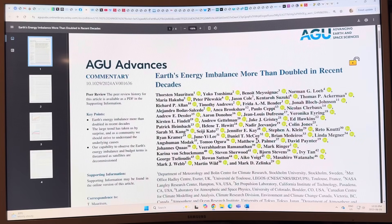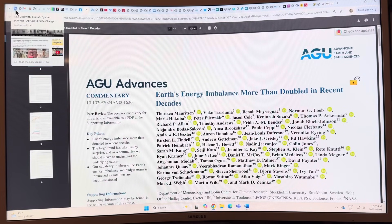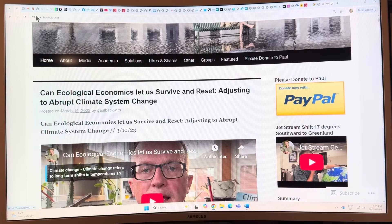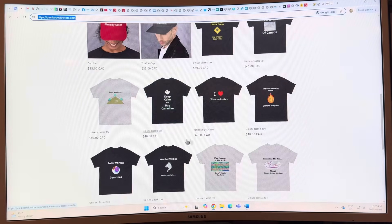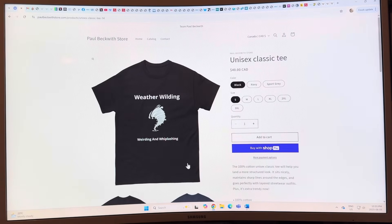Anyway, thank you for listening. Please consider going to my website paulbeckwith.net and donating to PayPal to support my research and videos. And of course you want to get this t-shirt - all hell's breaking loose, climate mayhem, or weather wilding, weirding and whiplashing. These are awesome logos. Yeah, you want to load up on t-shirts for the summer. It's going to be a very warm summer. Thanks for listening and bye for now.